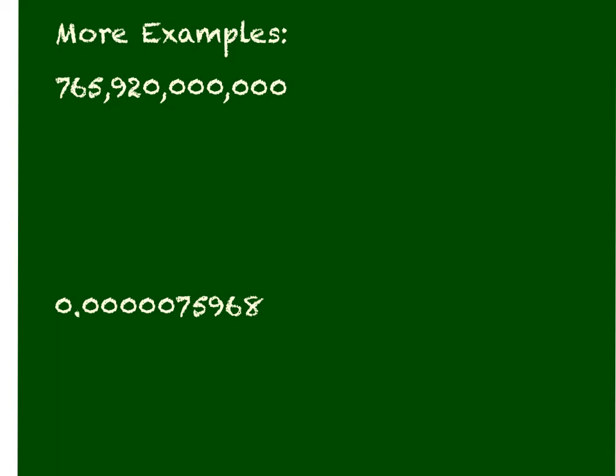A couple of quick examples here. We've got this really big number of 765 billion. So again, after you've done the quick example, you can pause this and start it back up and see if you've gotten it right. So in this case, I know I want to make my number, it's a big number. So I'm going to have that decimal between the 7 and the 6.